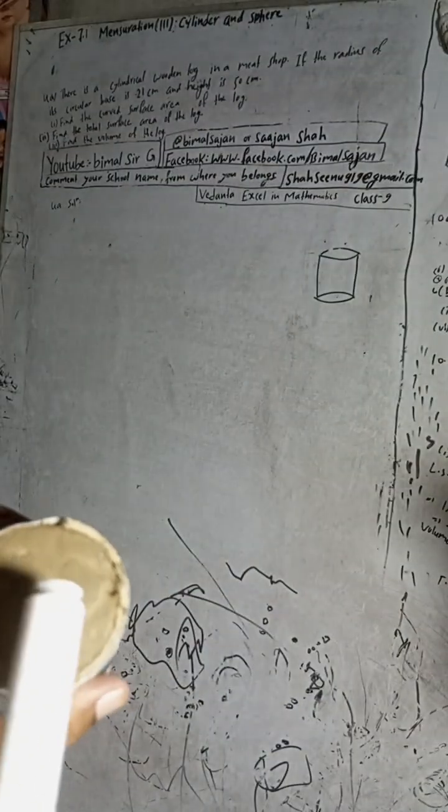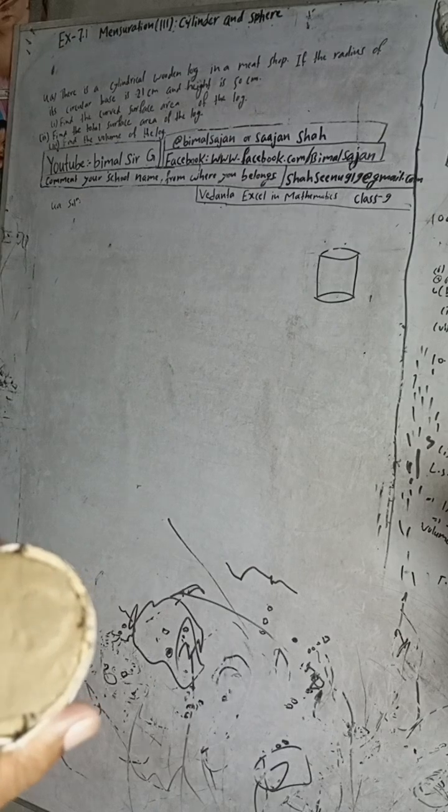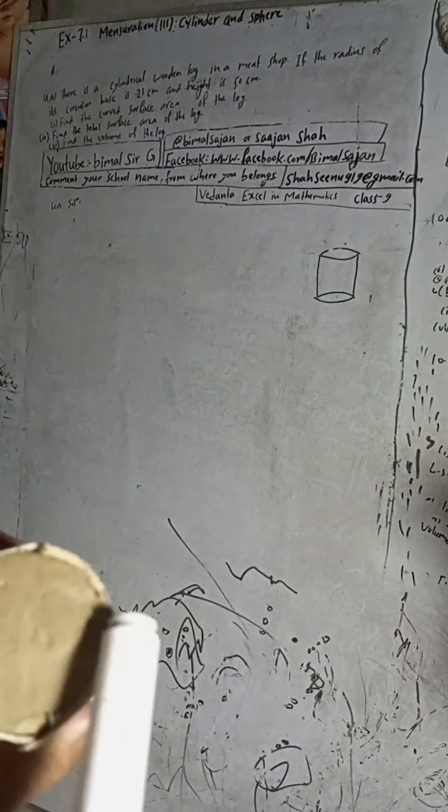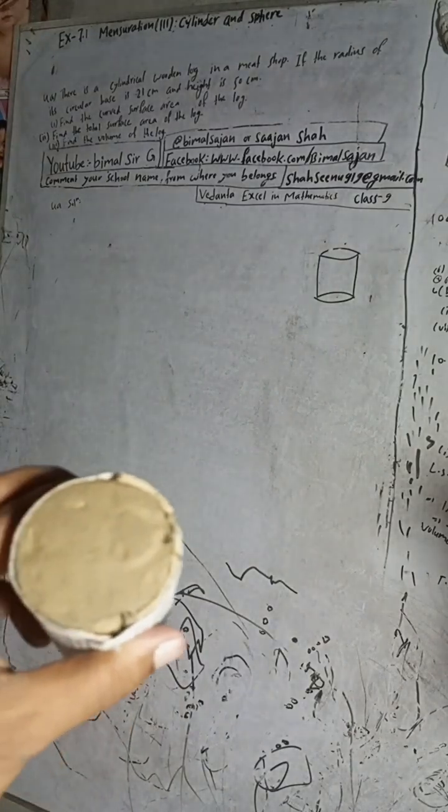The radius of its circular base is 21 cm. Radius means from the center to the edge of the circular base. The total is the diameter, and center to the edge is called radius.